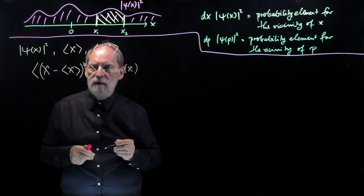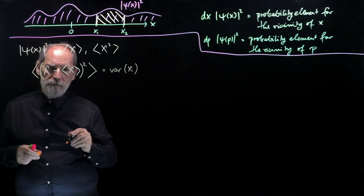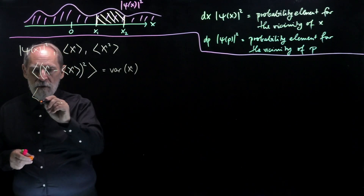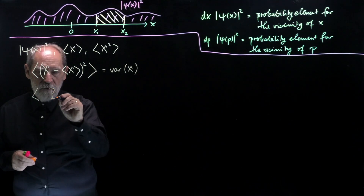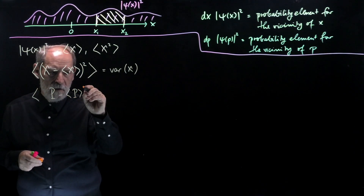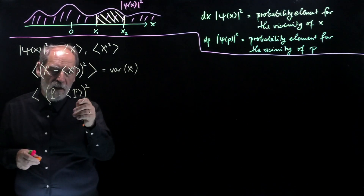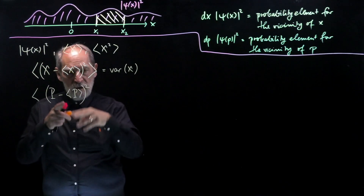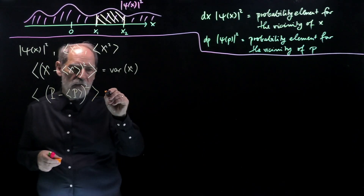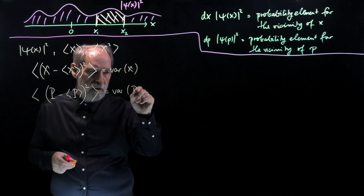And the same for momentum. We have the momentum variable, we subtract the mean value — that gives us the deviation from the mean value. We square the deviation, we take the expectation value, and this will be the variance of p.